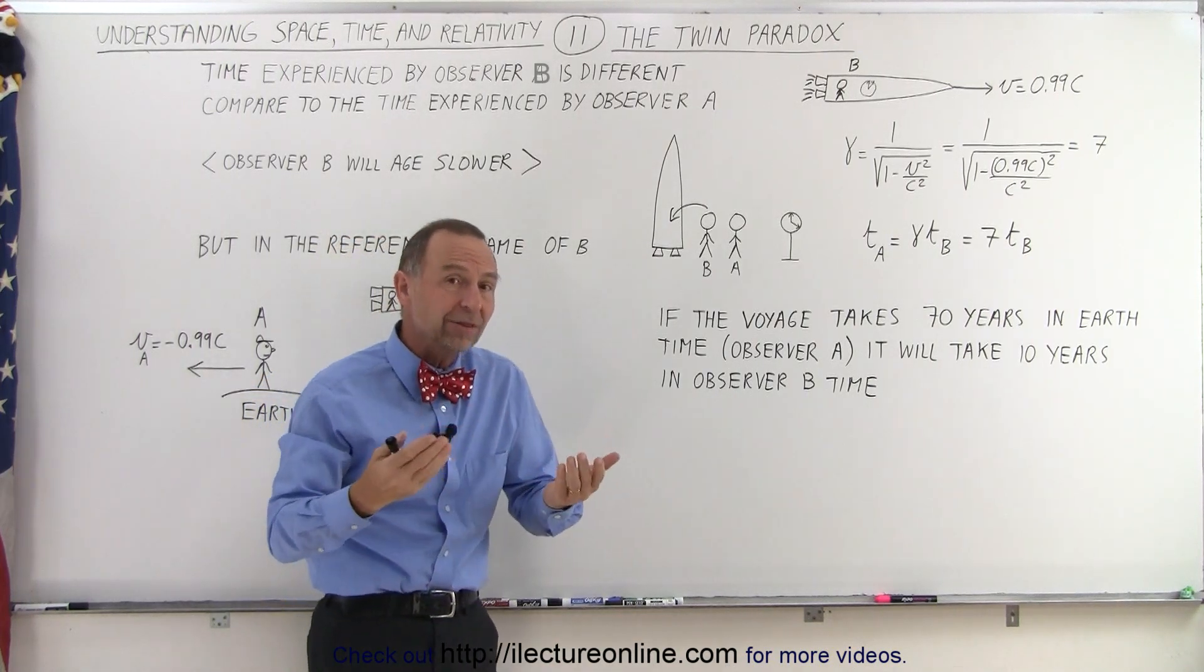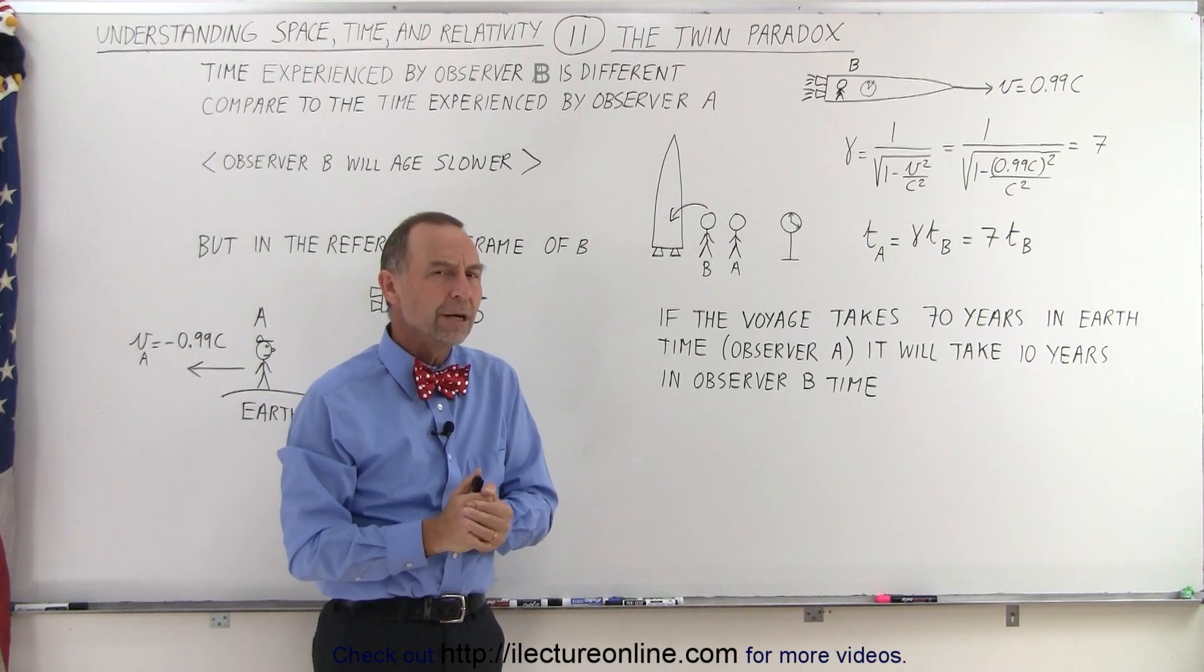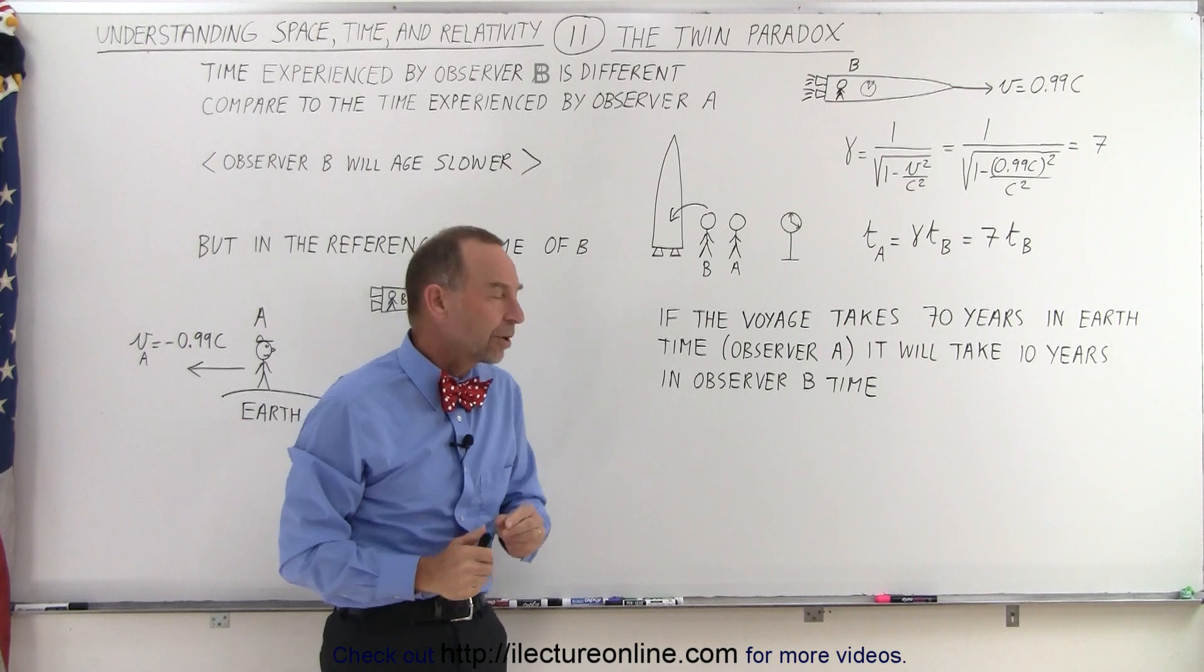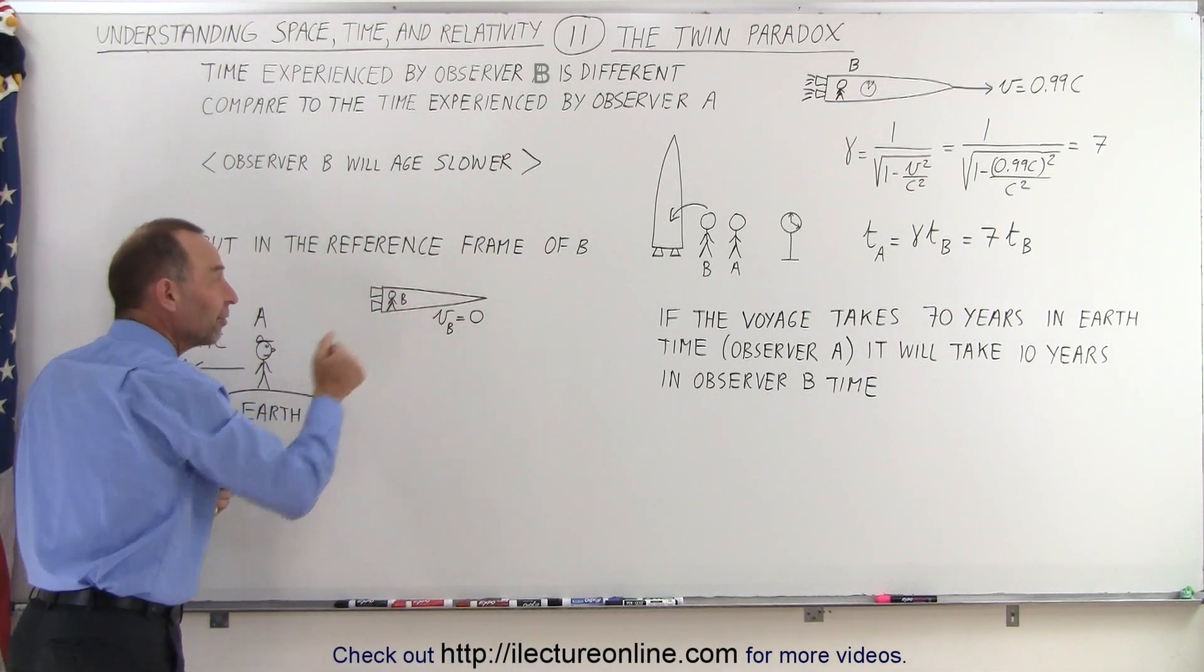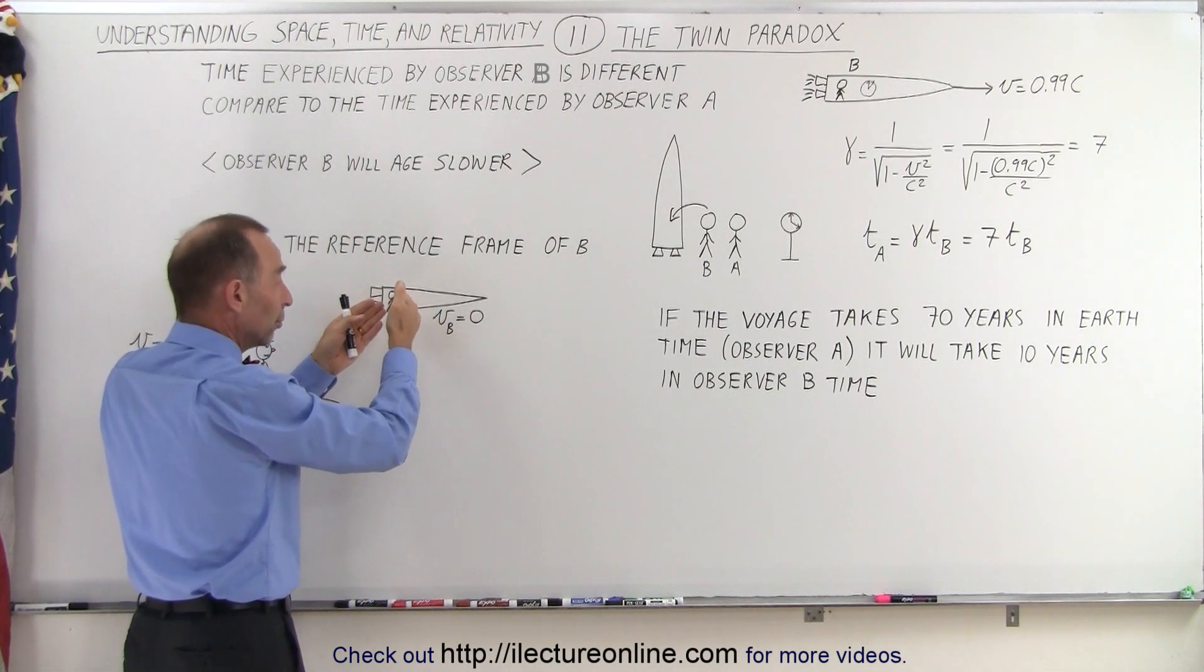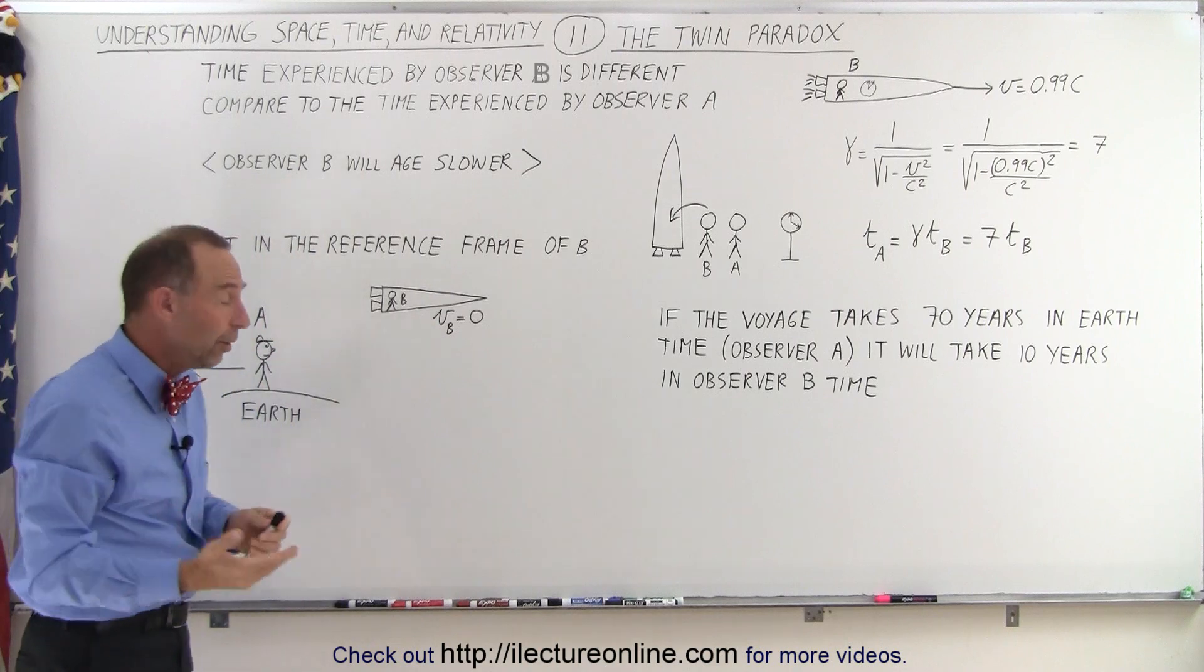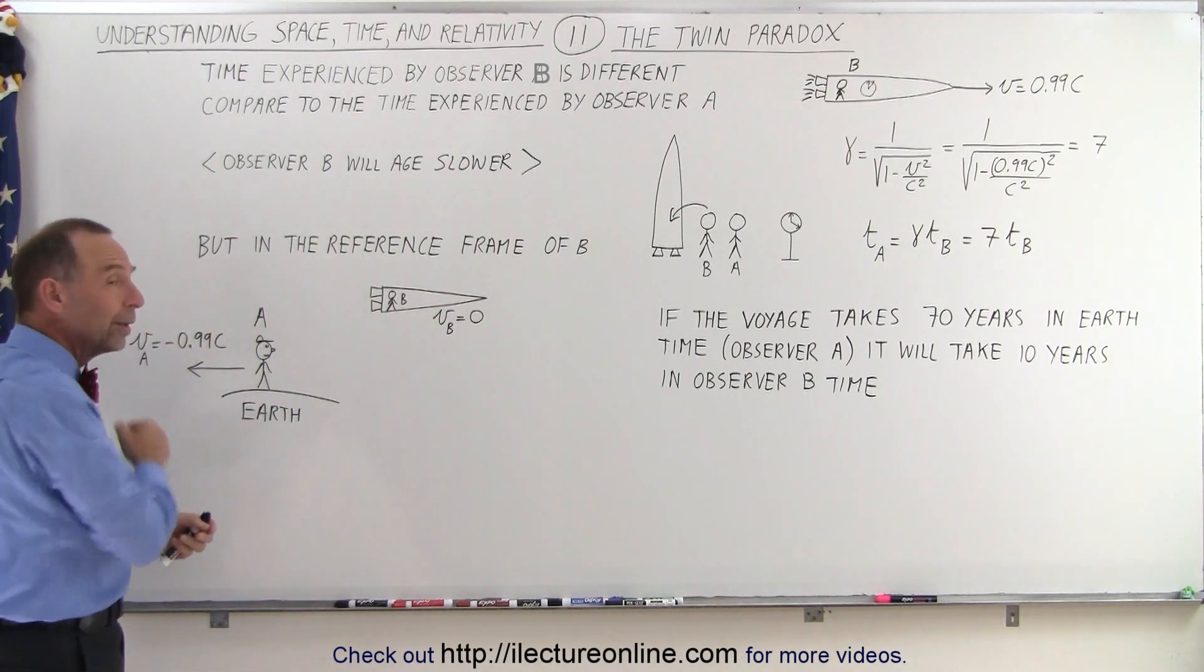So that's pretty well established, and we've done all kinds of experiments. We know that has to be true. But then where does the paradox come in? The paradox comes in when you realize that in B's reference frame, B is not moving at all. The velocity of B relative to B itself is 0, and Earth and observer A is moving backwards at 0.99C.